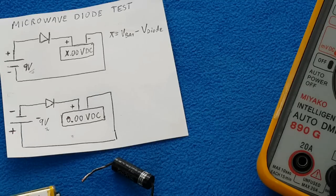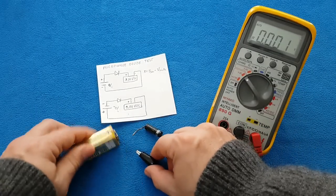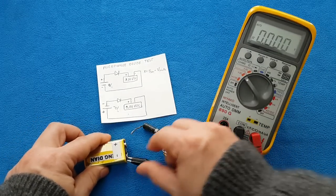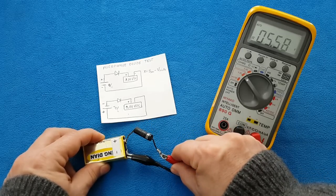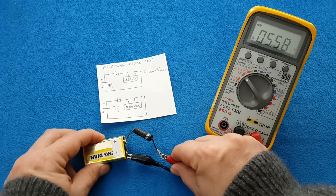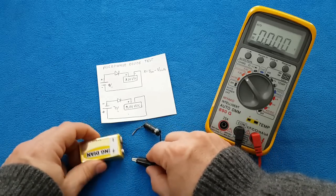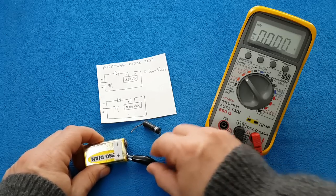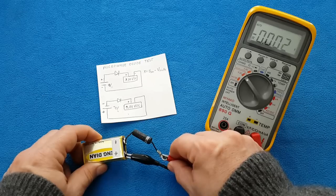Now let's go for the test. For the first diagram, it's 5.58 - the voltage in the battery minus the voltage drop across the diode. Inverting the polarity is zero.